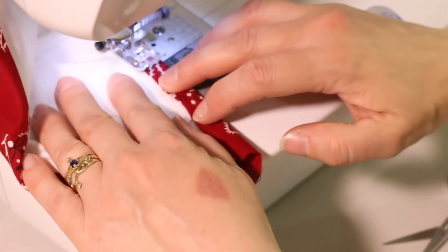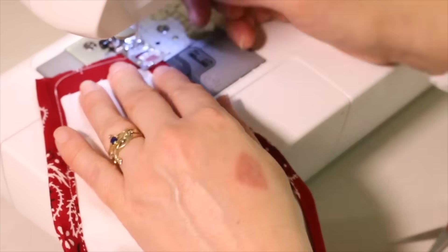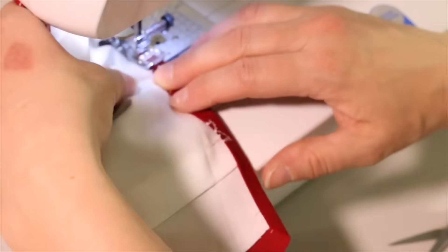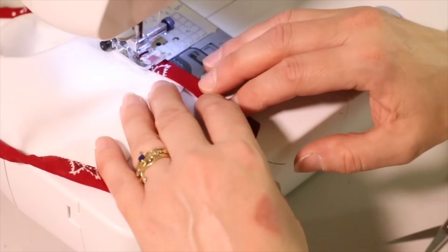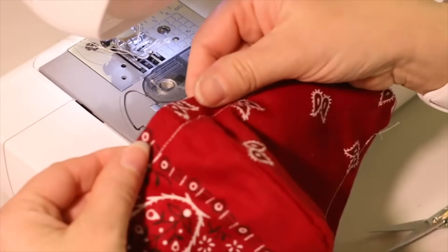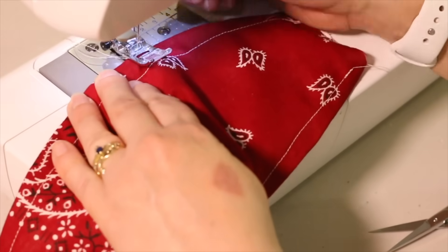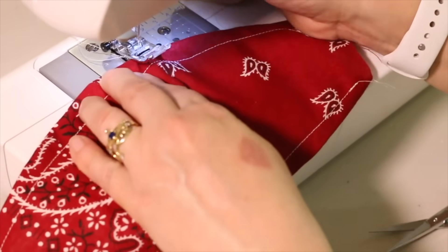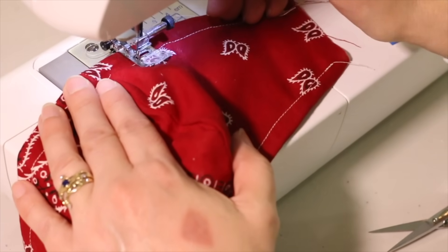Stitch along the edge of the fold, being careful to avoid stitching onto the nose clip. Rotate the mask and stitch along the chin side of the mask. Now flip the mask over and feel for the nose clip. Sew a few stitches to the left and right of the nose clip to keep it from sliding around in the mask.